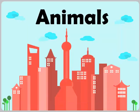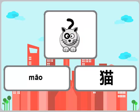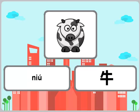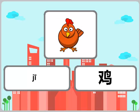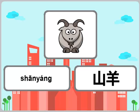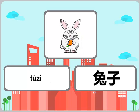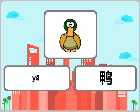Animals: Dog 狗, Cat 猫, Cow 牛, Horse 马, Chicken 鸡, Sheep 羊, Goat 山羊, Rabbit 兔子, Donkey 驴, Duck.